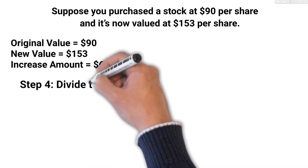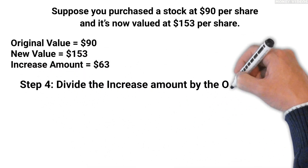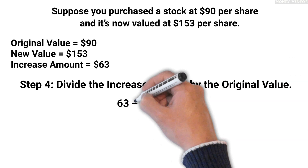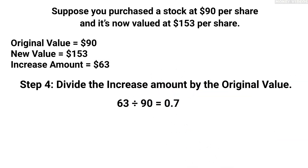Step 4: Divide the increase amount by the original value. This tells you what portion of the original value the increase represents. In this case, it is $63 divided by $90, which equals 0.7.